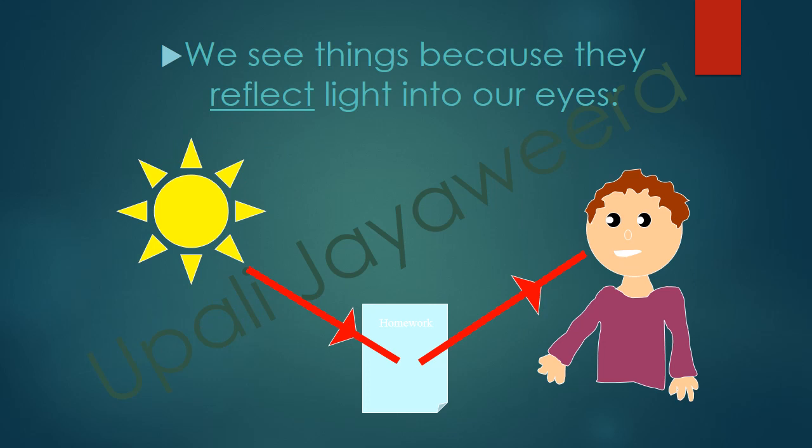We see things because they reflect light into our eyes. Due to sunlight, an object can be seen — it reflects the sunlight and the light rays come to our eye. So reflection is needed to see the different objects in our environment.